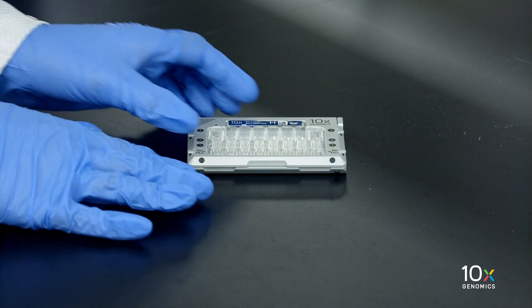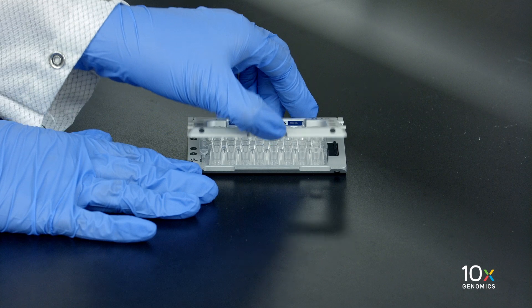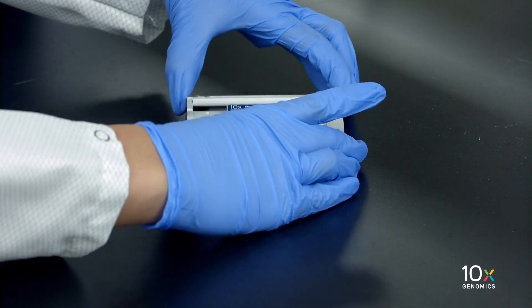Discard the gasket and open the chip holder. Fold the lid back until it clicks to expose the wells at a 45-degree angle.